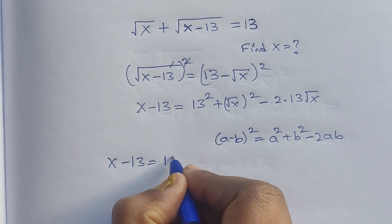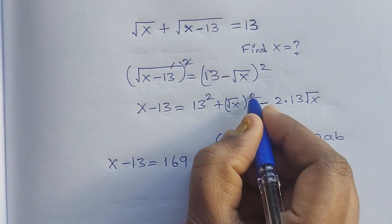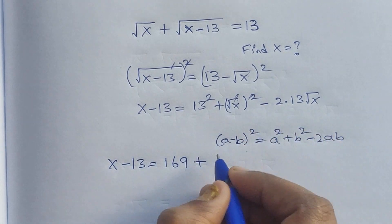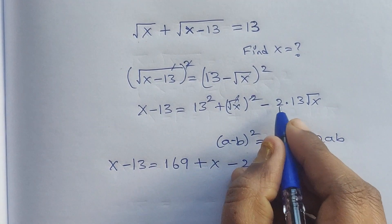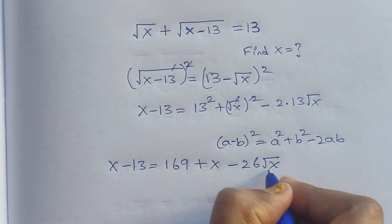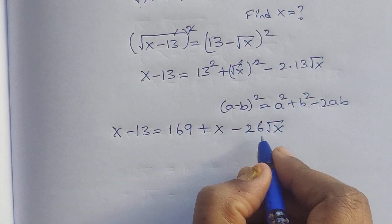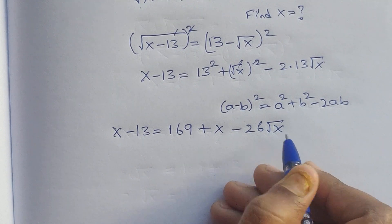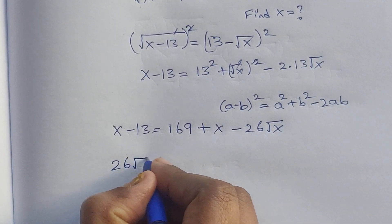13² is 169, and (√x)² gives x. So: x - 13 = 169 + x - 26√x. I'm moving -26√x to the left side, where it becomes positive: 26√x.